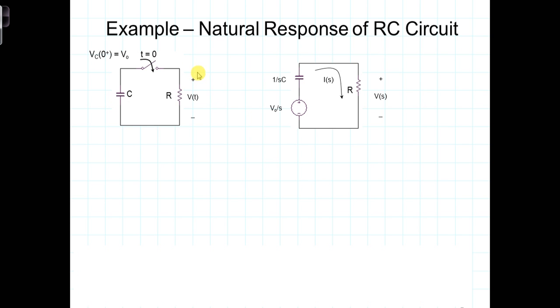So our first step is to transform it into the frequency domain. The capacitor comes in with an impedance of 1 over SC. The initial condition of V equals V0 comes in as a voltage source in series with that capacitor as V0 over S. The resistor is just what it is. And at this point, we're looking only at T greater than zero, so we don't even show the switch there.